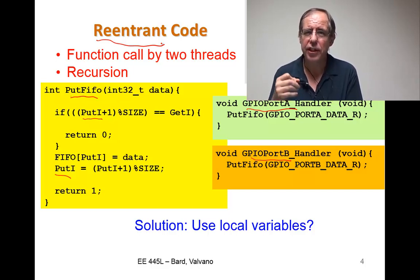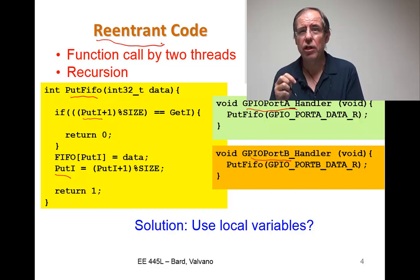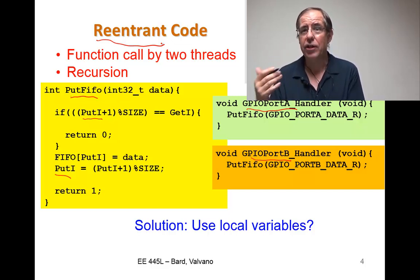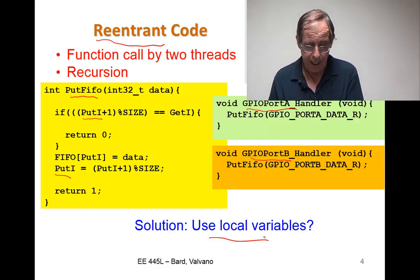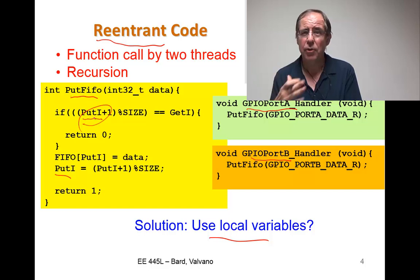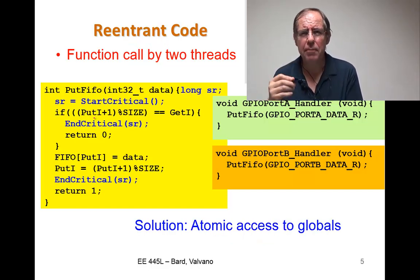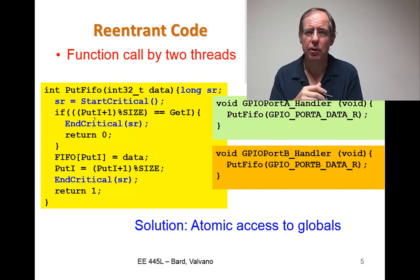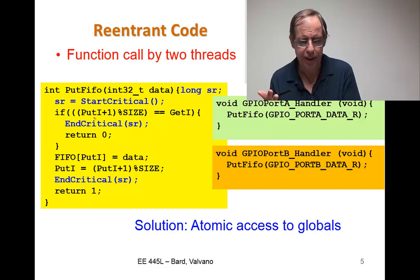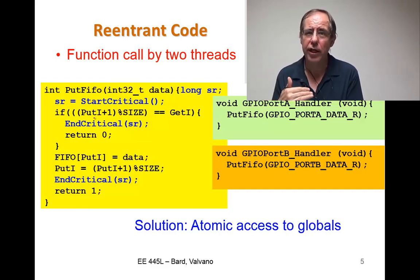And to solve this problem, we like to use locals. But I can't make put I local because it has to have permanence. So I have to make put I global. So the solution is to make the access to the shared global atomic. And I do that by disabling interrupts, accessing the shared global, and then re-enable interrupts.